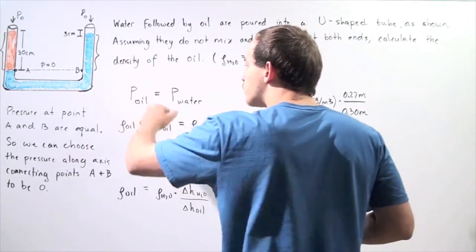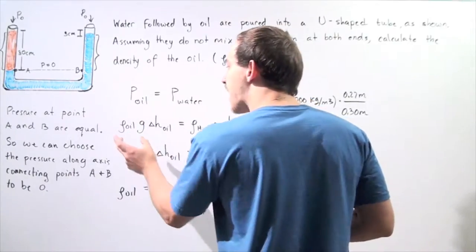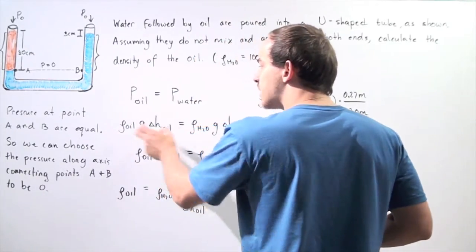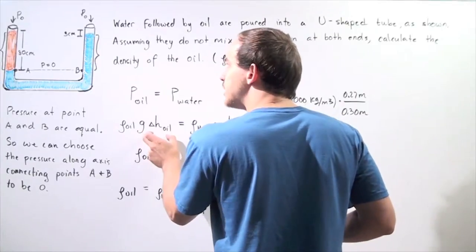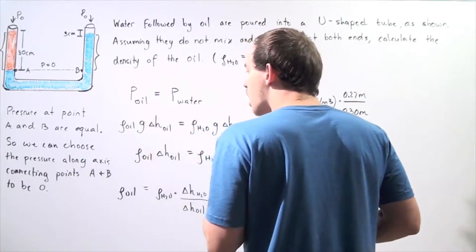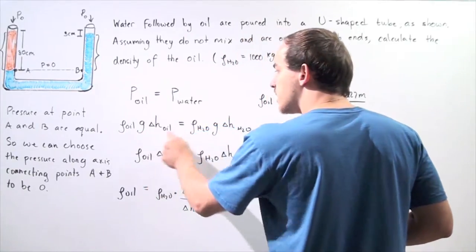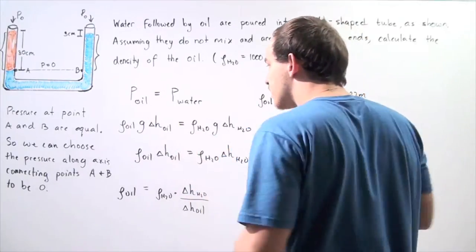So we replace the P's with our density, our g, the gravitational constant, and the change in vertical distance. So notice that g's appear on both sides, so we can cancel them out.